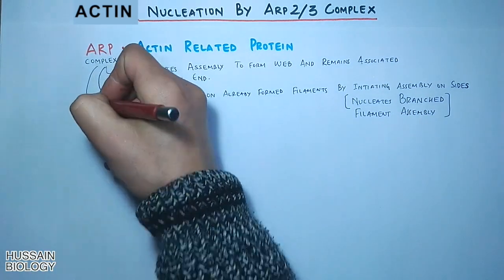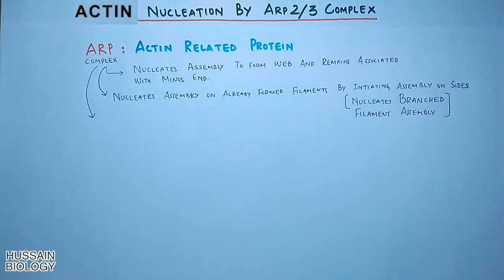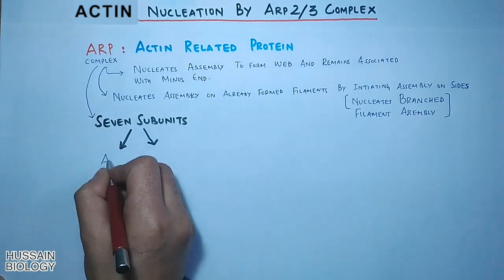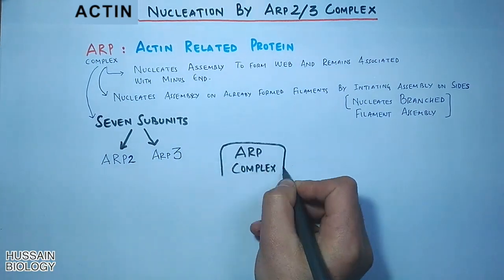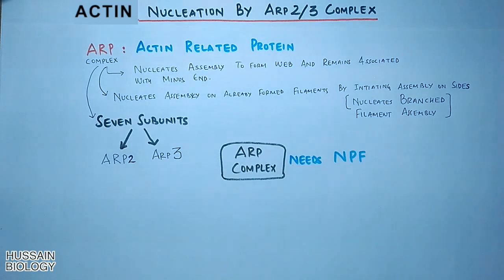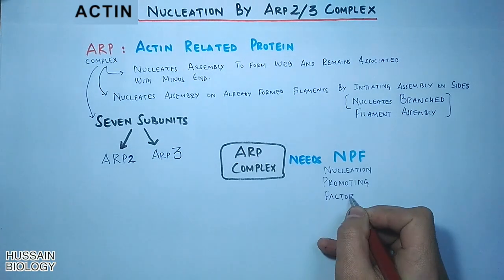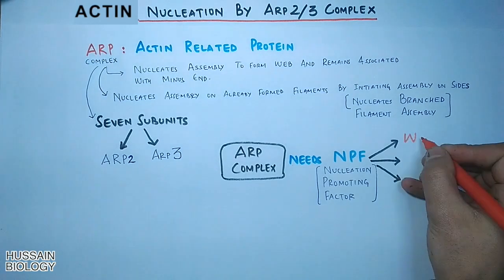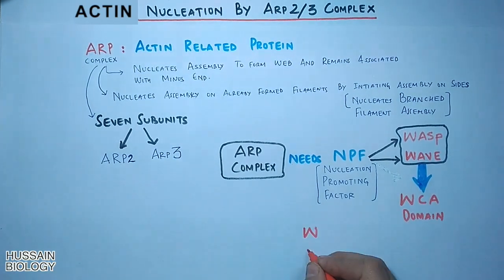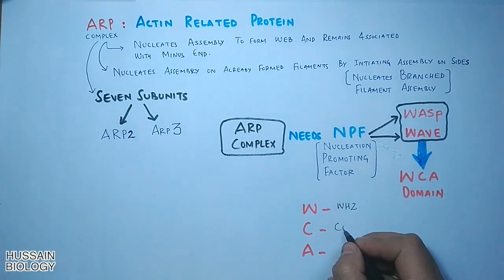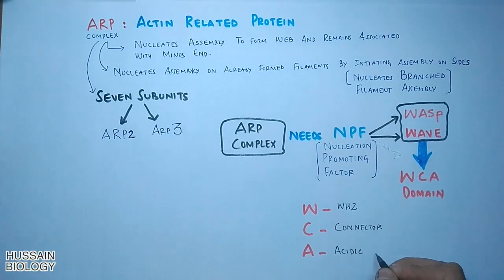If we see the structure of ARP complex, it has seven subunits of which two are important ones: ARP2 and ARP3. In order to promote the nucleation process, the ARP complex needs NPF, the nucleation promoting factor. Like we have WASP and WAVE, both are NPF having WCA domain. The W stands for WH2, C is the connector, and A is the acidic domain.